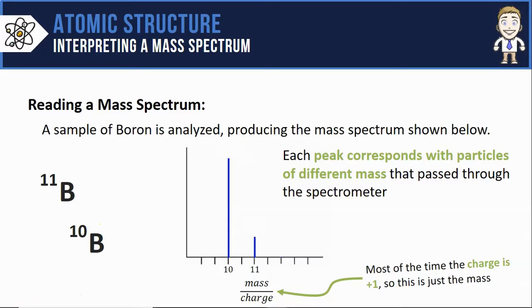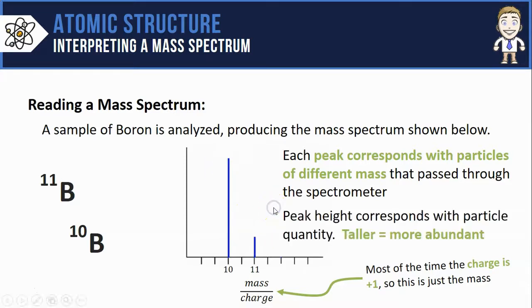The last element of the spectrum that needs some analyzing has to do with the heights of the peaks. You can see this one at 10 is much taller while the 11 peak is much shorter. The peak height simply corresponds with the particle quantity. The taller it is, the more abundant that particle was.